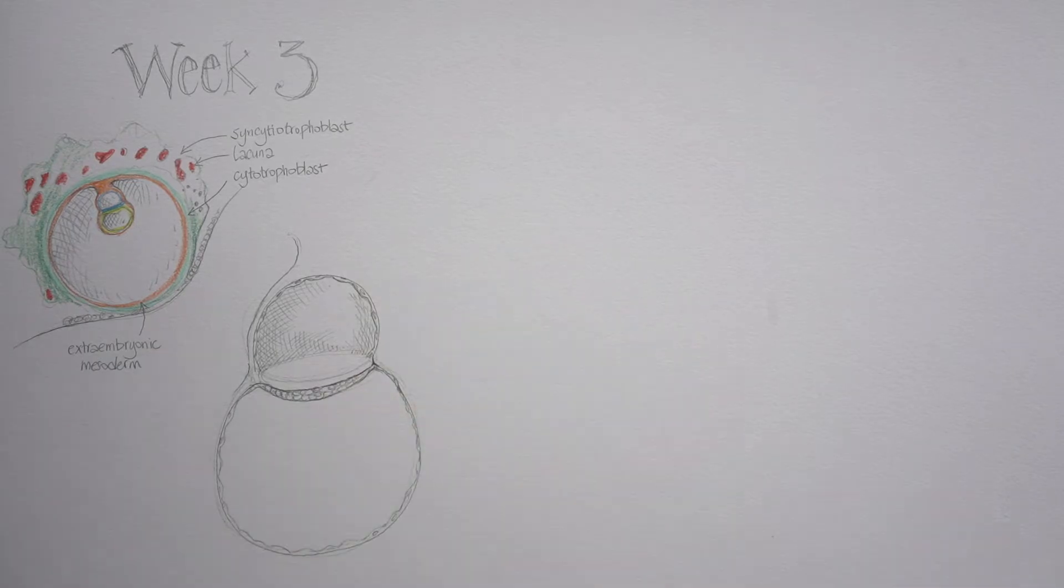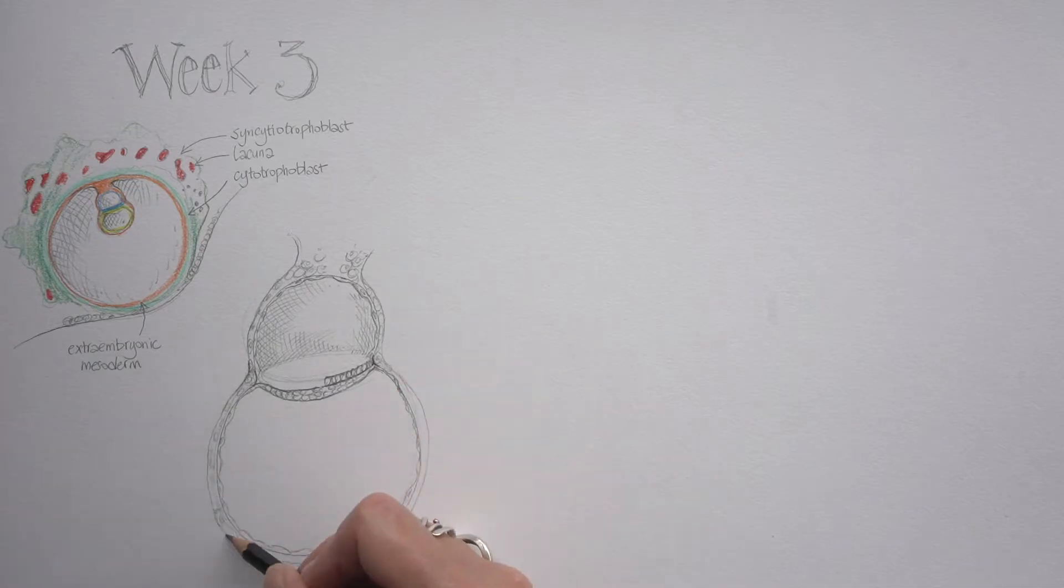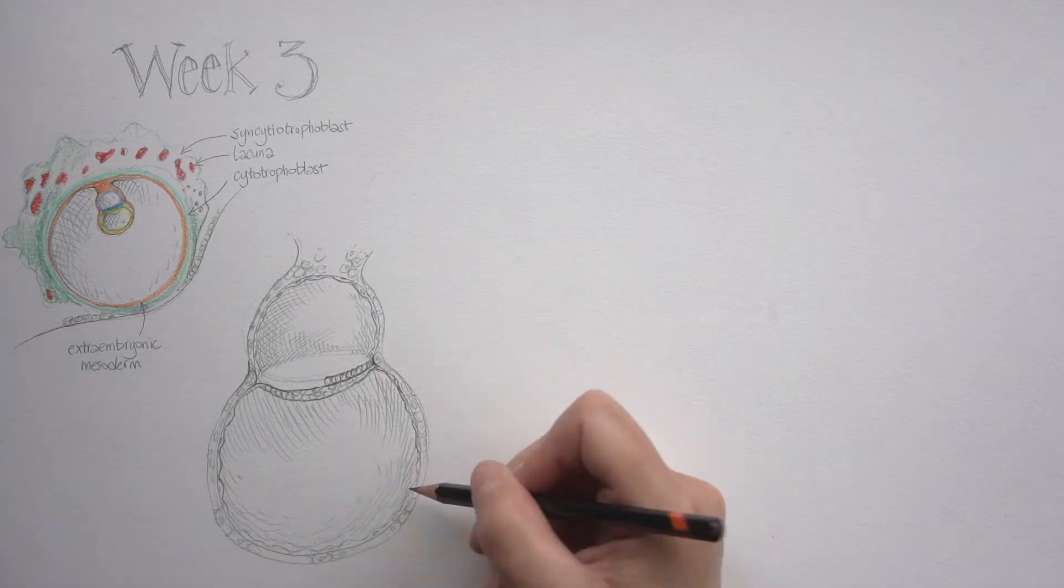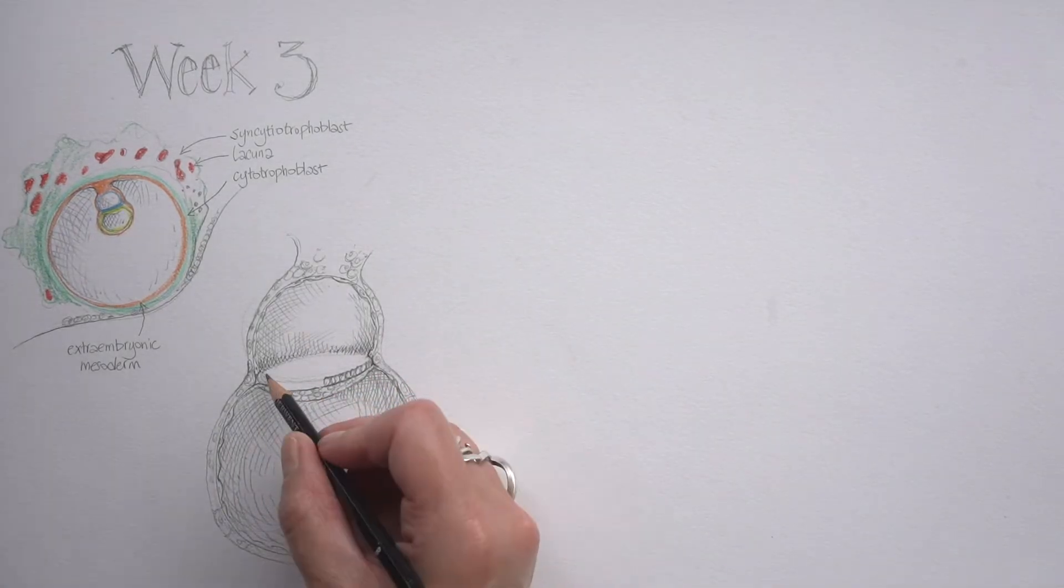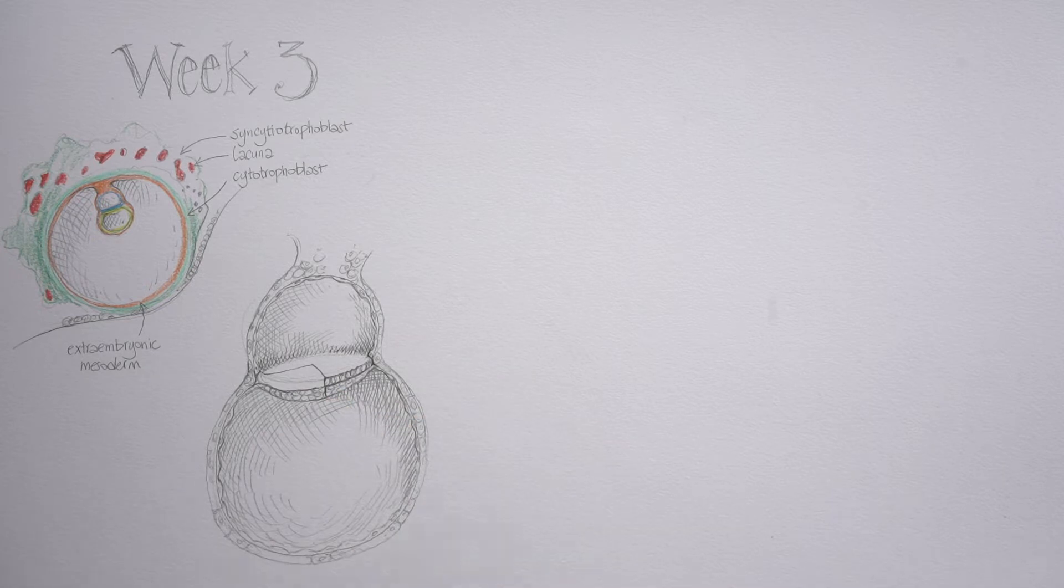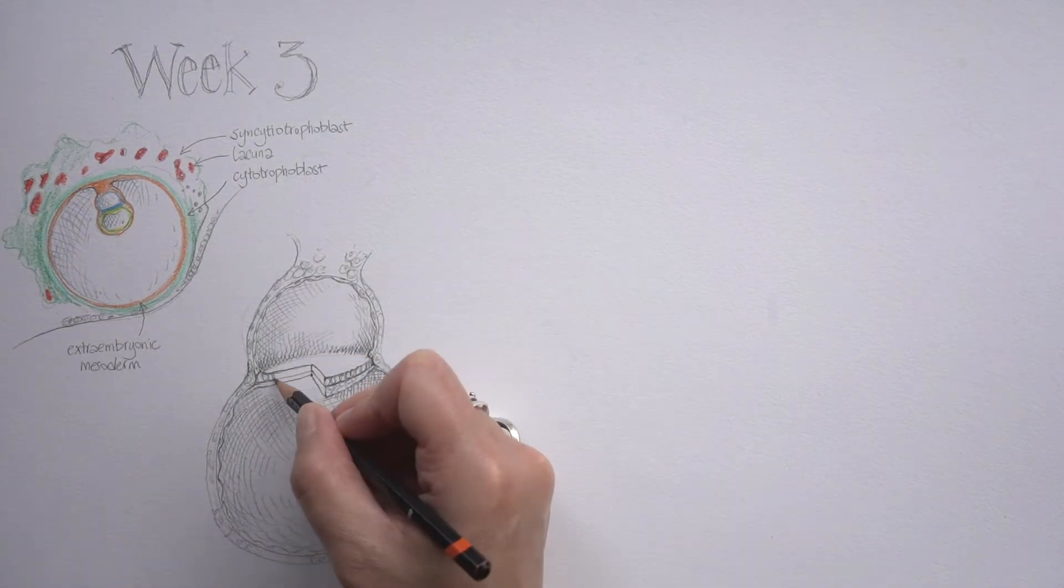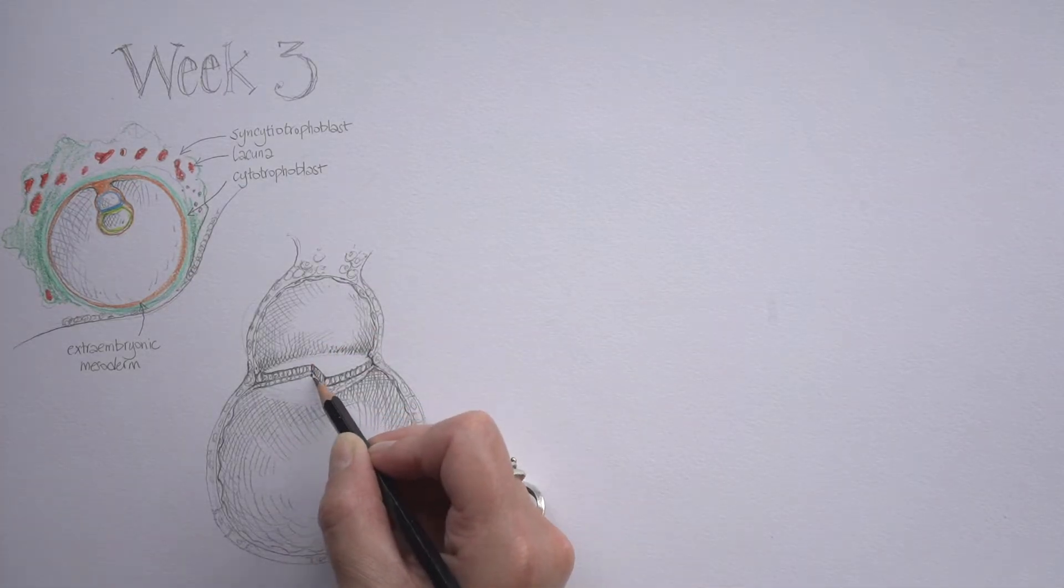I'm now just focusing in on this two-layered disc, the bilaminar germ disc and its associated cavities and the mesoderm around the outside of that, so that we can understand its 3D structure. I'm going to take a slice out of it just to make that even more explicit and draw it as though it's a Victoria sponge cake that we've taken a large quarter slice out of.